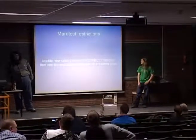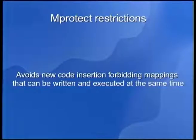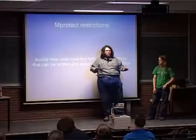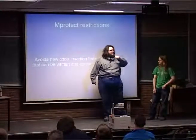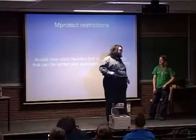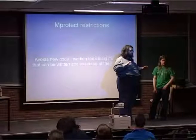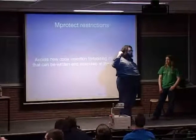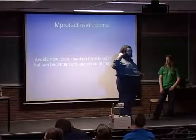That brings us to mprotect restrictions. We don't allow users to write and execute memory at the same time. If we know this region does stuff, we're not going to allow anybody to modify that mapping to do different things. This has problems — someone will ask about JIT. Yes, we know, and you can disable this on a per-binary basis. For example, on Firefox you can disable mprotect if you need write and execute permissions at the same time.